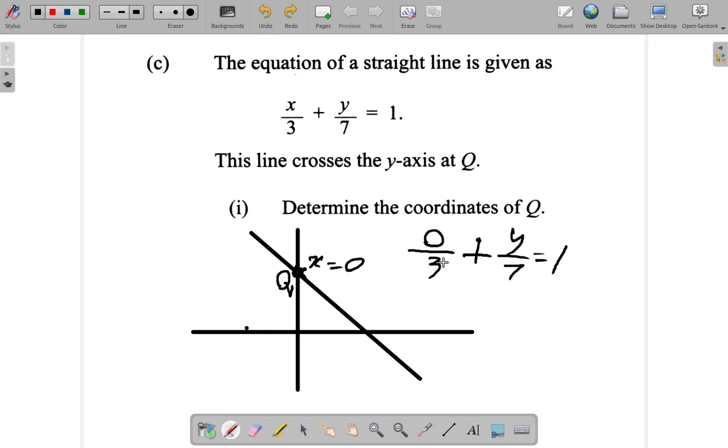It's not 3, it's not 1, it's 0. So 0 divided by 3 is 0. So y over 7 is equal to 1.